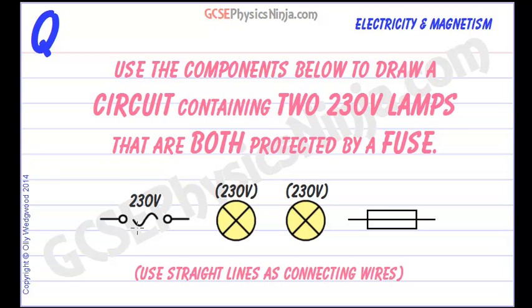We have an alternating current supply, that's your typical household electricity supply at 230 volts and that is going backwards and forwards at about 50 times a second or 50 hertz. We have two lamps and they are both rated at an operating potential difference of 230 volts, so we must make sure that they have 230 volts across them for them to light with normal brightness, and we have the circuit symbol for a fuse here.